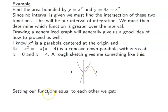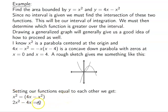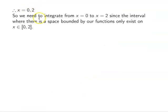I'll set the functions equal to find the second intersection point. Setting x² = 4x − x², moving everything to the left gives 2x² − 4x = 0. Factoring out 2x: one zero is x = 0 and the other is x = 2. So my bounds are x = 0 and x = 2, and I integrate from zero to two.